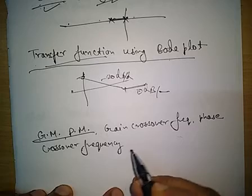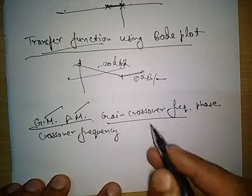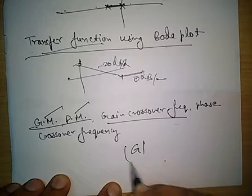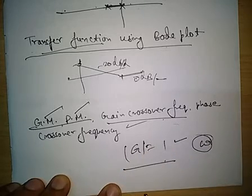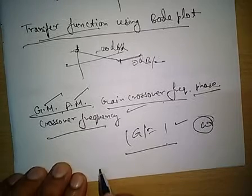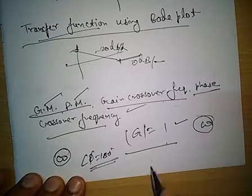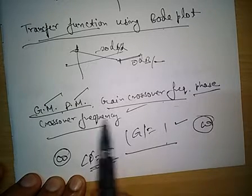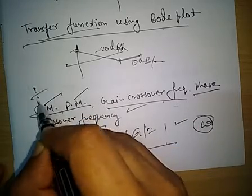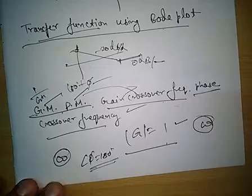The next important topic is Gain Margin and Phase Margin. For a given transfer function, gain margin, phase margin, gain crossover frequency, and phase crossover frequency can be asked. The gain crossover frequency is where |GH| = 1, and the phase crossover frequency is where the phase angle becomes −180°. Gain margin is 1/|GH| at phase crossover, and phase margin is 180° plus the phase angle at the gain crossover frequency.